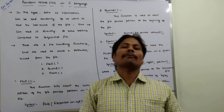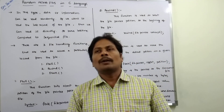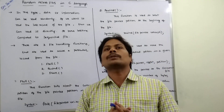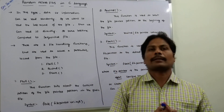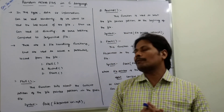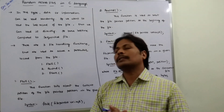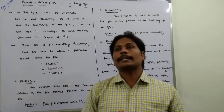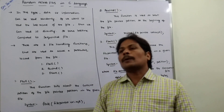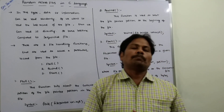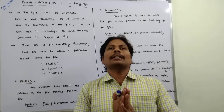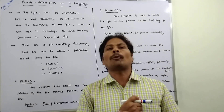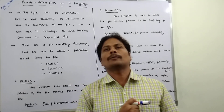Random access takes very less time. There are three file handling functions used to support Random Access Files. The first one is the ftell function, the second one is the rewind function, and the third one is the fseek function. The ftell function tells about the current position of the file pointer in the given file.